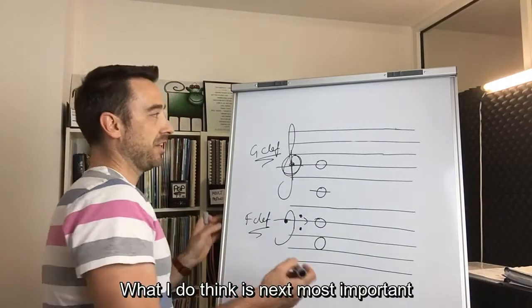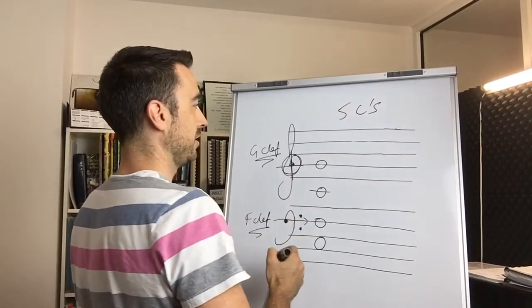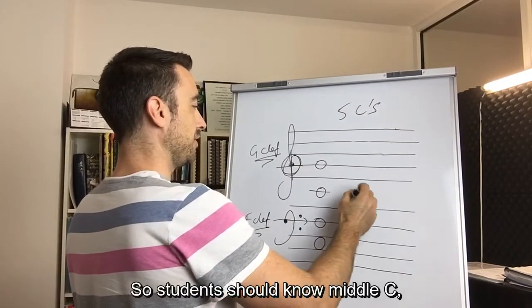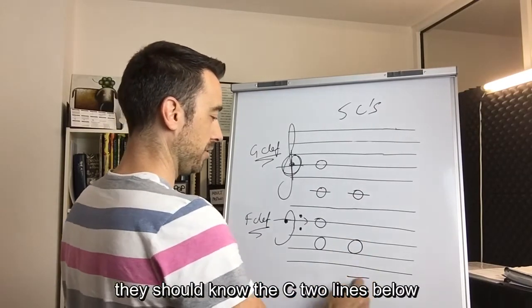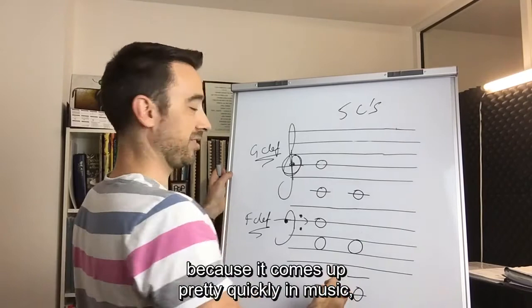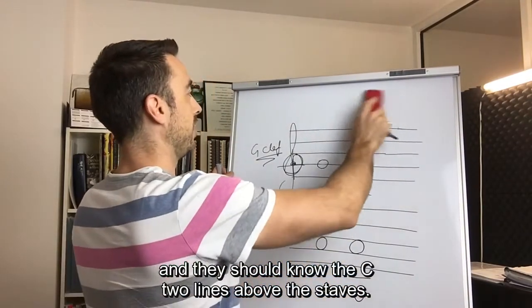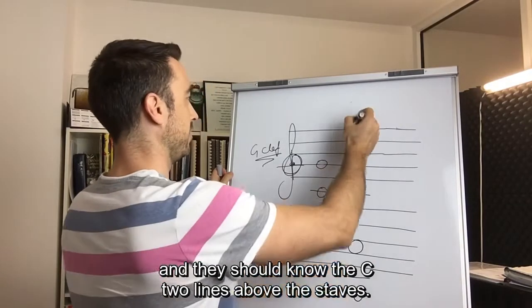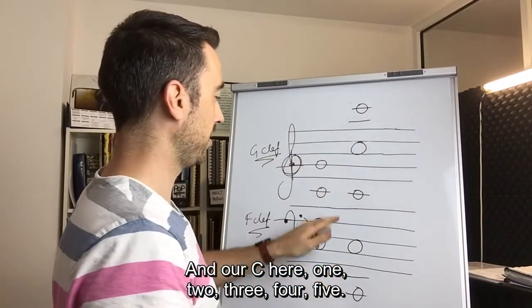What I do think is next most important is what I call the five Cs. So students should know middle C. They should know the C down here. They should know the C two lines below because it comes up pretty quickly in music. And they should know the C two lines above the stave. And our C here. One, two, three, four, five.